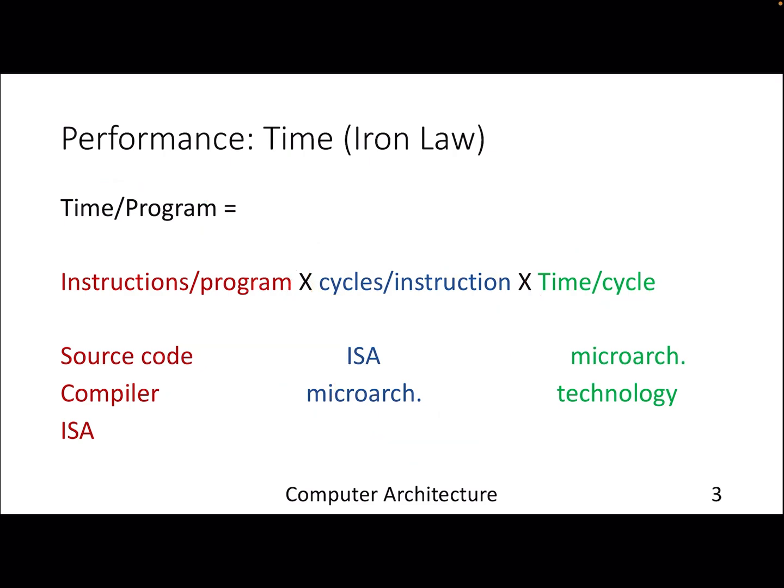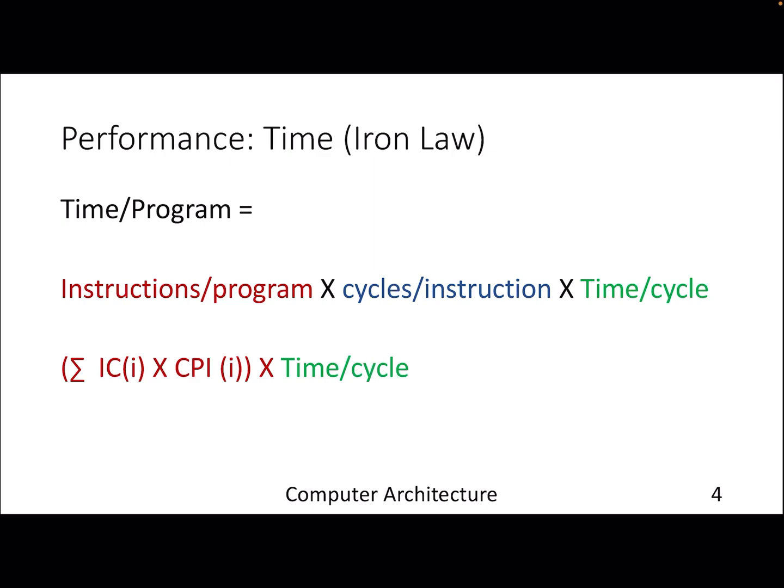If I look in detail for each instruction, instead of just saying instructions per program, we can say instruction count. We have different kinds of instructions like jumps, loads, and arithmetic instructions. For each instruction we can have the count and find out their cycle per instruction. Eventually we're trying to optimize this particular term, the cycle per instruction, because instruction count is already generated by your compiler.